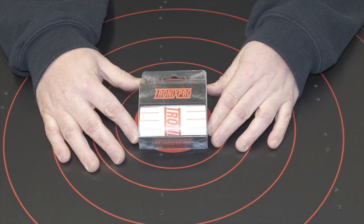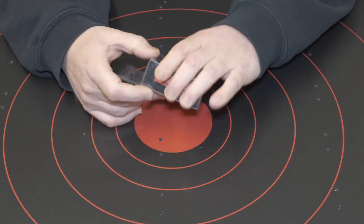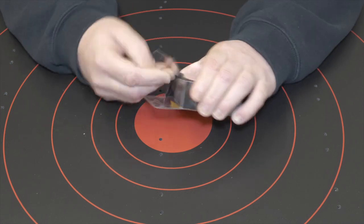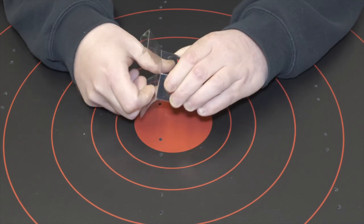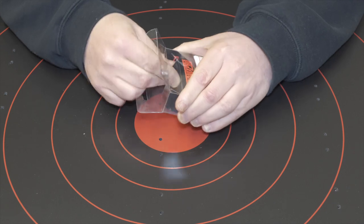Hi guys, this is the folding fish ruler from Tronix Pro. I know a lot of guys, especially match anglers, don't like this kind of ruler because it's not 100% accurate.